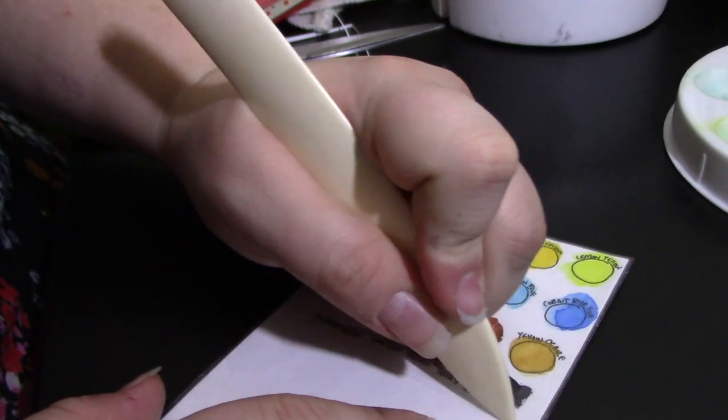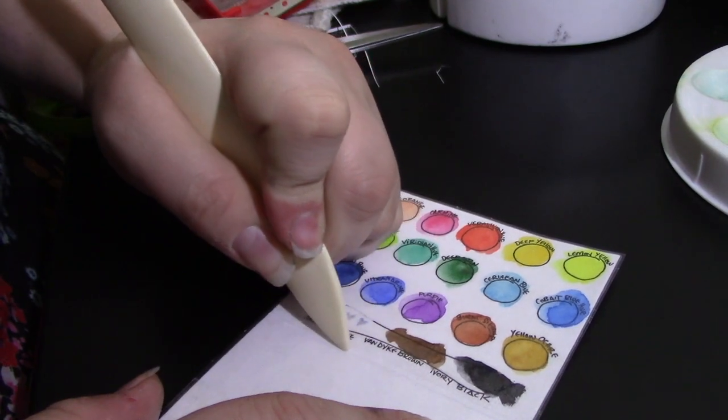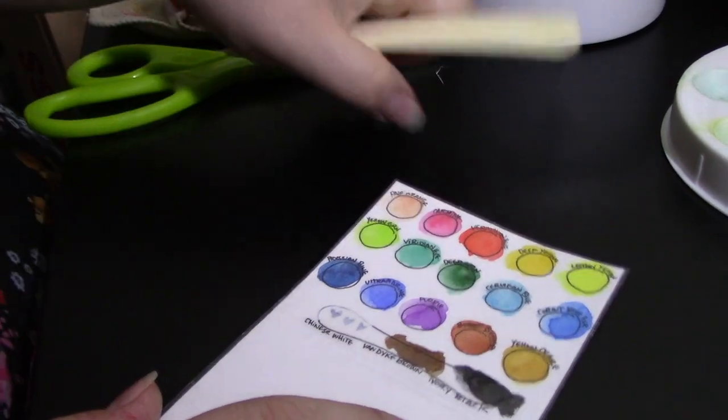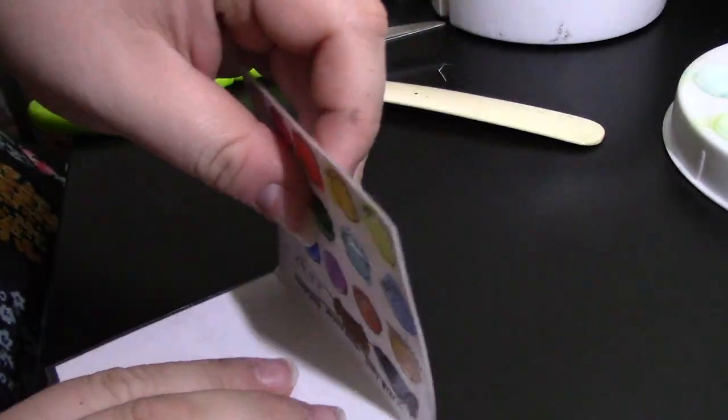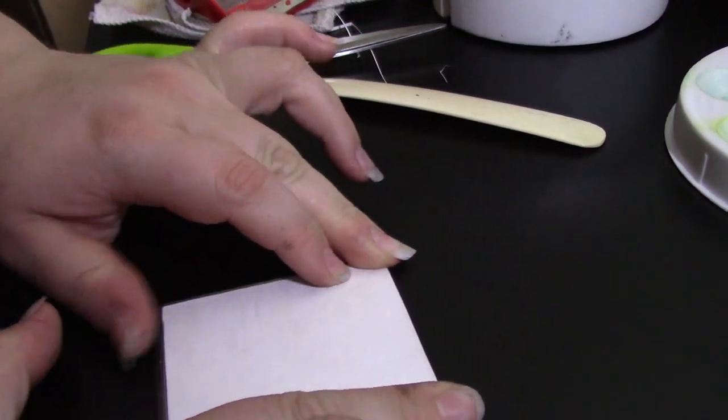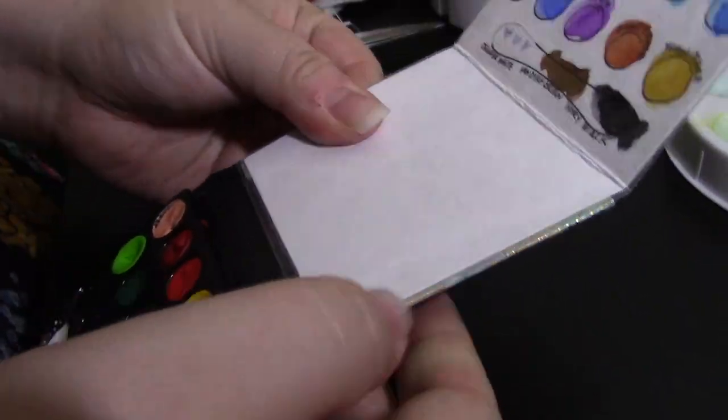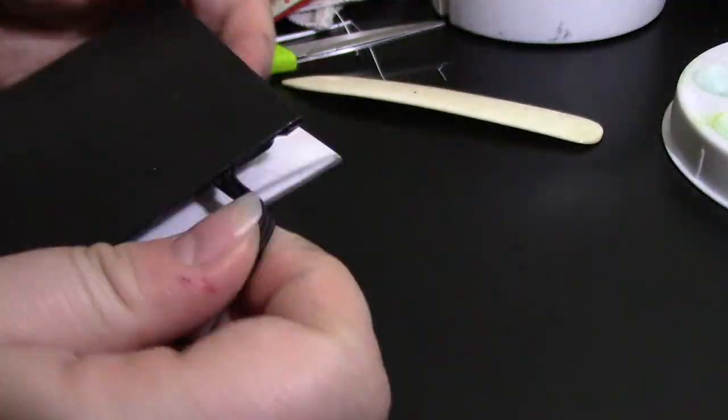Afterwards, trim off any excess tape, use your bone folder to trace over the crease in the middle that we made earlier, and fold your paper in half once again. Check that it still fits in your palette, adjust as needed, and then use hot glue to attach it, making sure that your swatches are on the top half and facing you, and the bottom half is blank.